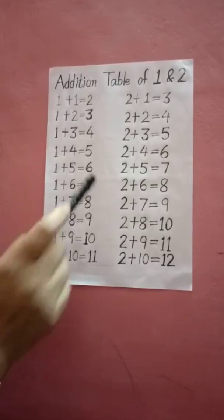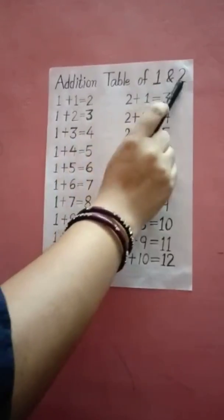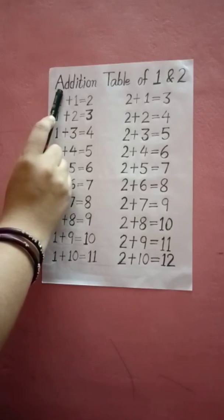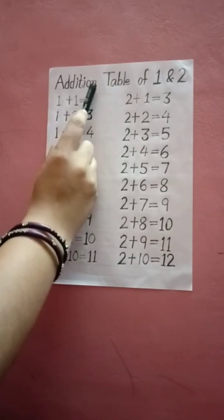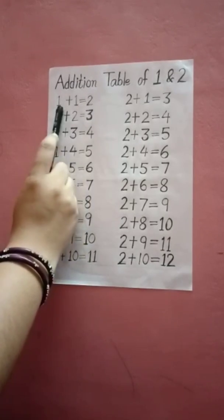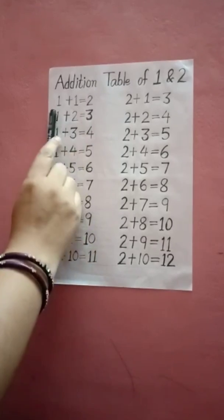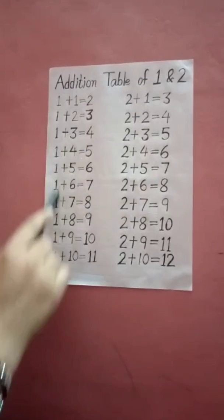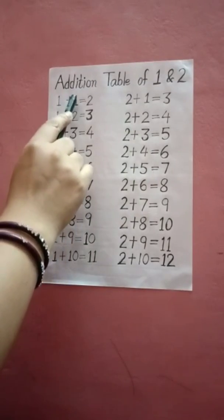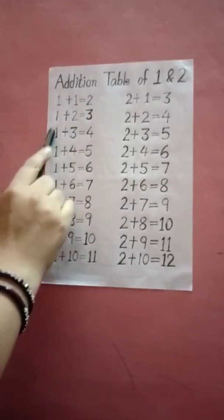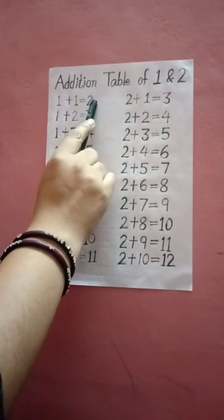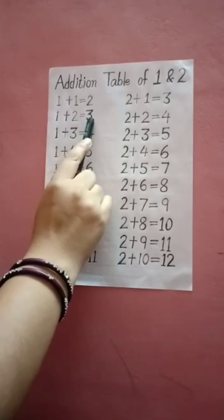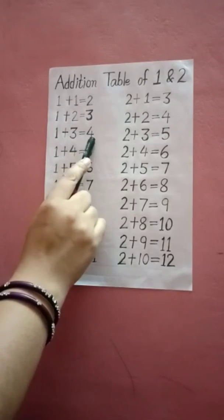Let us see the addition table of 1 and 2. We already know that addition means to add something, to increase something. When we see the addition table of 1, what happens is the numbers increase by 1. For example, 1 becomes 2, 2 becomes 3, 3 becomes 4, and so on.